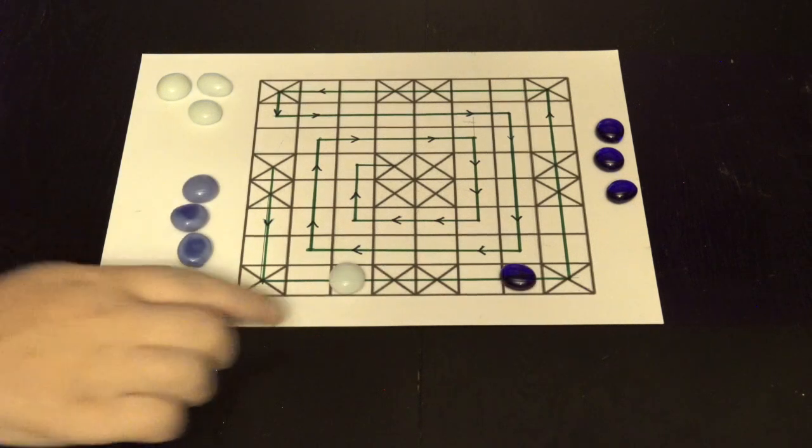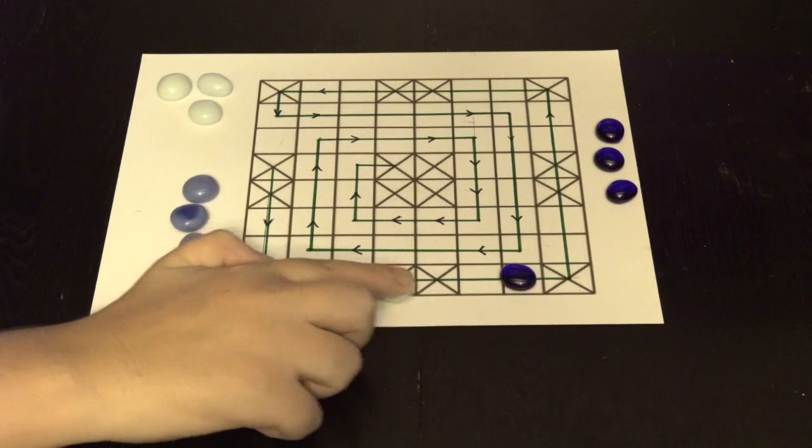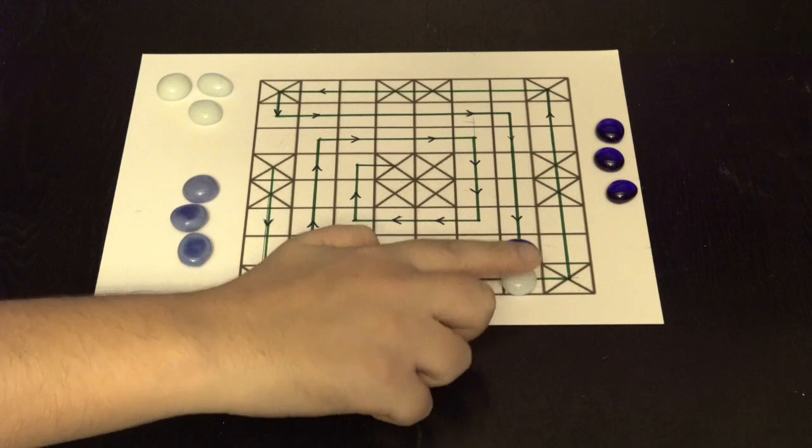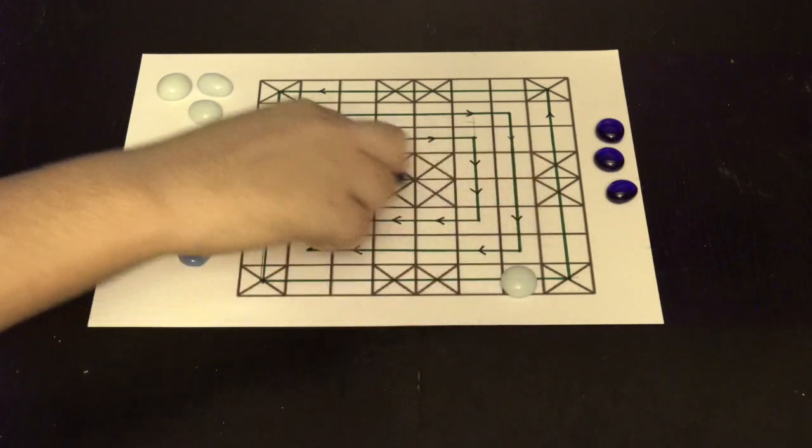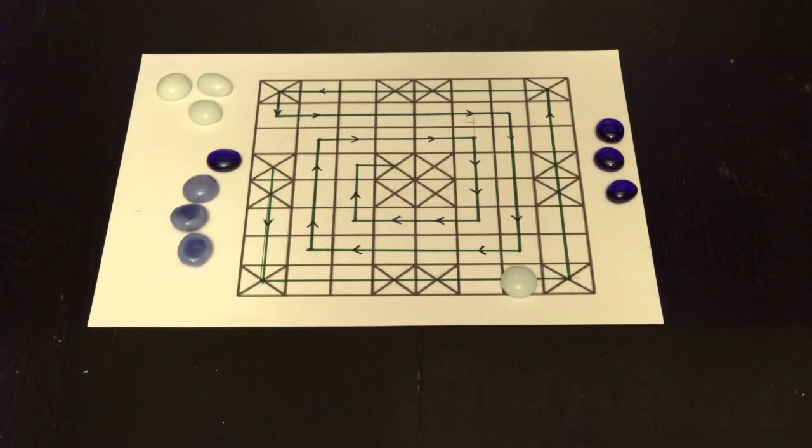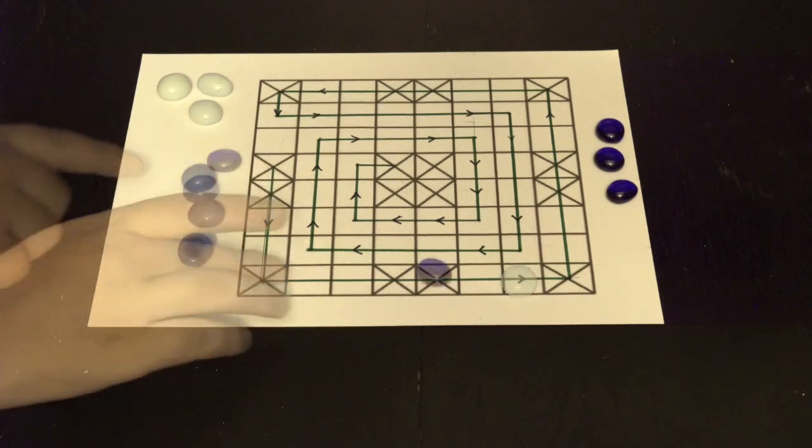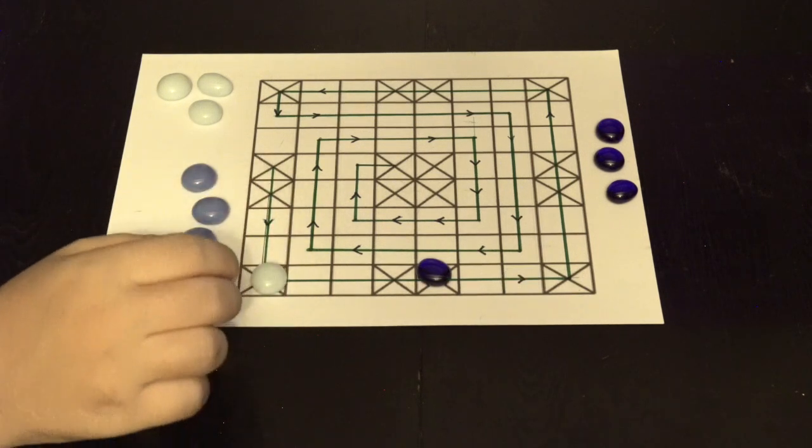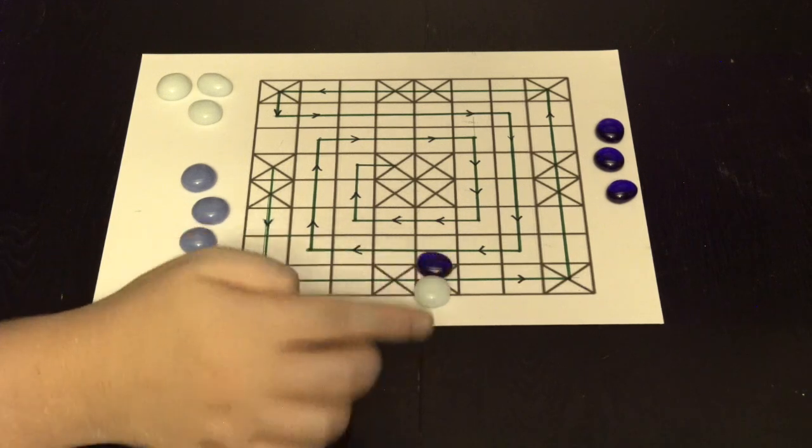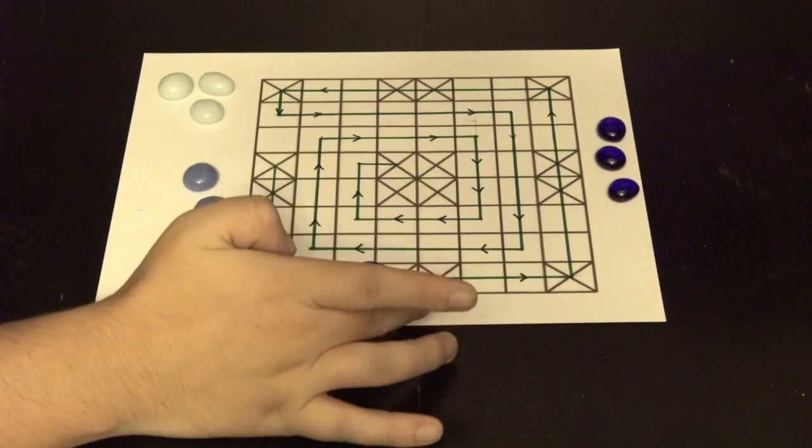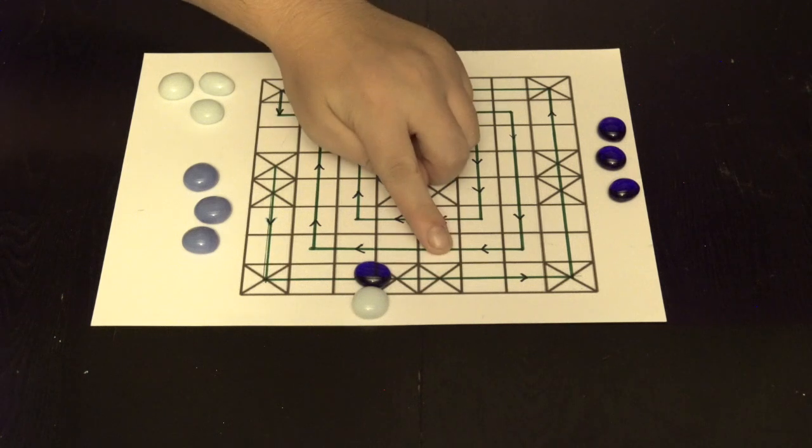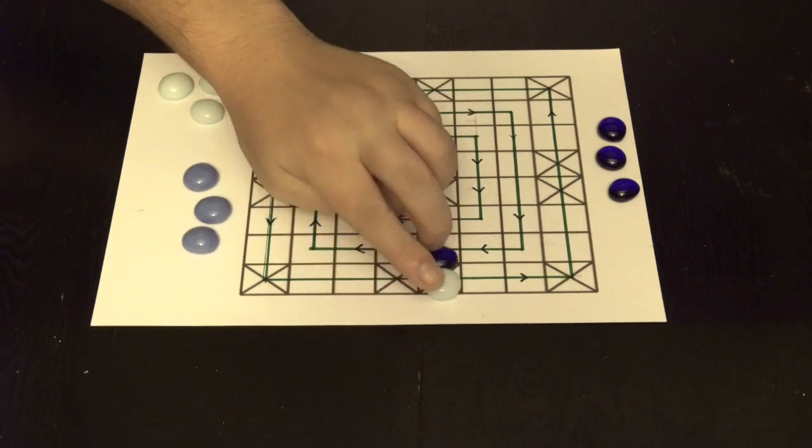If a player's piece lands directly onto an opponent's piece, that piece is taken out of play and sent back to the beginning of the maze. If they both land on a safe zone, then both pieces may share that space. Safe zones are marked with an X.